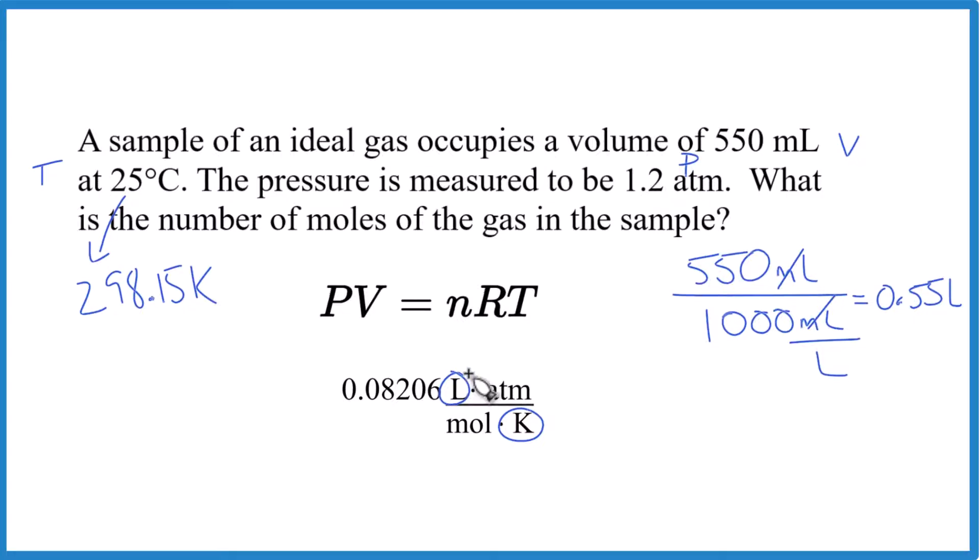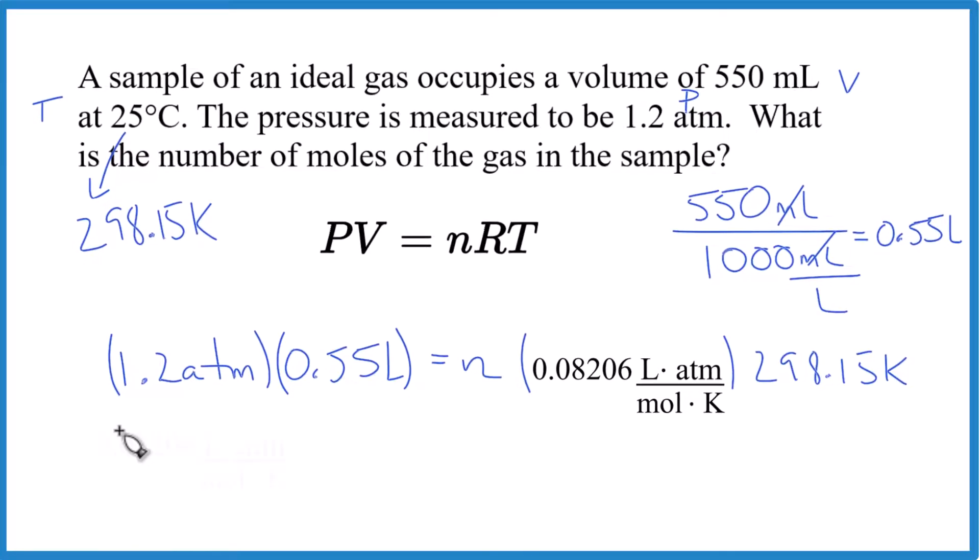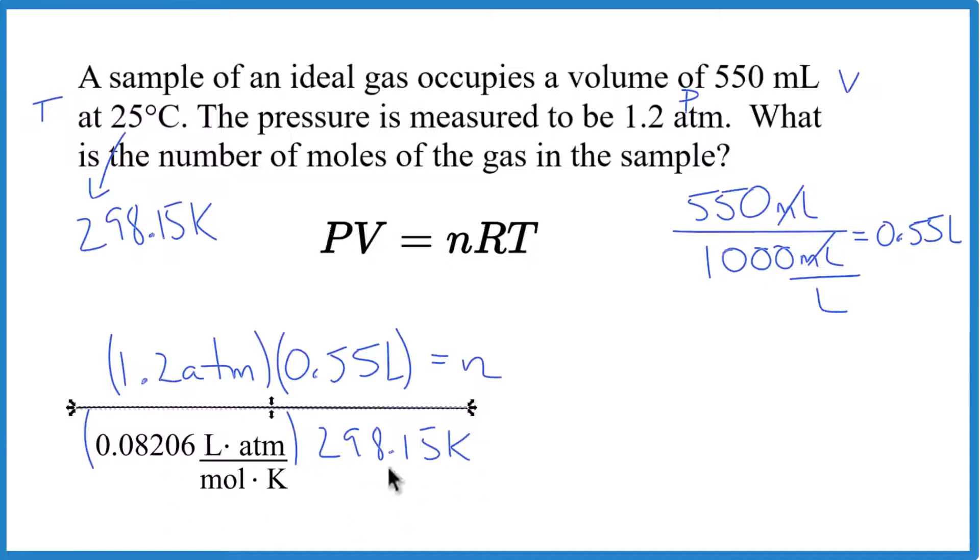Let's plug everything in and then solve. So to get n by itself, let's just move all of this over here. Essentially, we're just dividing both sides by this so it cancels out.